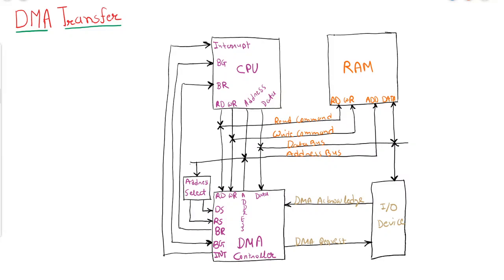In the previous video we discussed what is DMA. In this tutorial we will discuss how DMA transfer will take place and how DMA transfer operation will be performed. First of all, CPU will communicate with DMA using the address bus and data bus. This will be the first step — you can say it will initialize the DMA. In the next step, the CPU will start the transmission using the address bus and data bus.